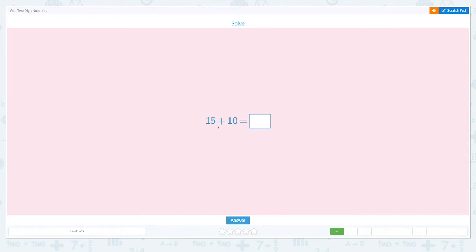So, 15 plus 10. 15 plus 10 equals... 5 plus 0 is 5, and 1 plus 1 equals 2. So the answer is 25. Correct.